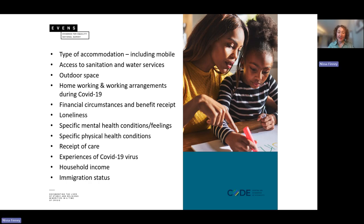There are some variables in EVANS that are quite unusual for this kind of dataset: type of accommodation, access to sanitation and water, outdoor space, working arrangements, financial circumstances, loneliness, mental health, very specific physical health conditions, receipt of care, experiences of COVID, income, and immigration status.